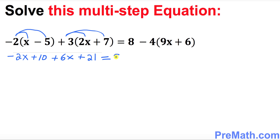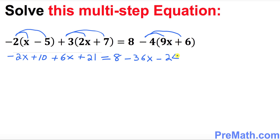And then that becomes plus 21. On the right hand side, we leave 8 as it is, and we're going to distribute on this side as well. Negative 4 times 9X is going to be negative 36X, minus 24.